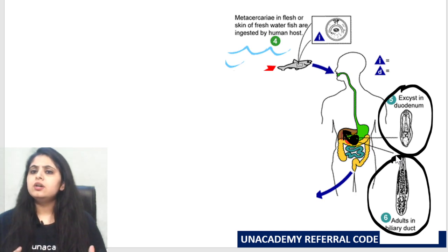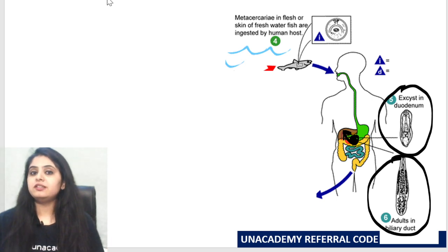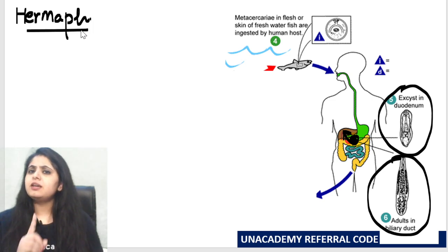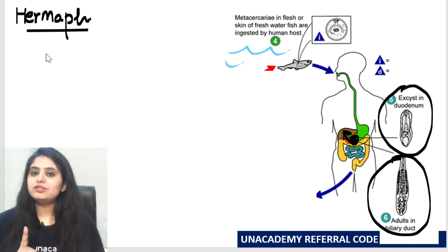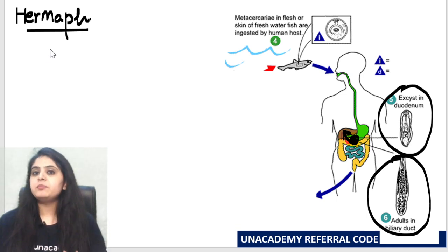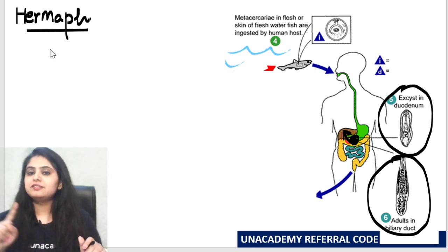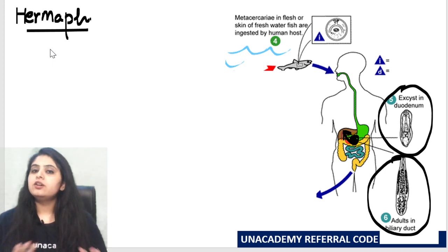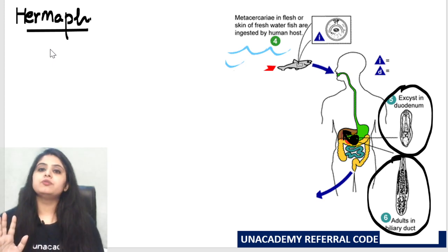Do you remember — are all trematodes male and female separate, or are they hermaphrodites? All trematodes are hermaphrodites except for one: the S rule — Schistosoma. Schistosoma has male and female sexes separate. So sexes are separate in Schistosoma; all the rest of the trematodes are hermaphrodites.